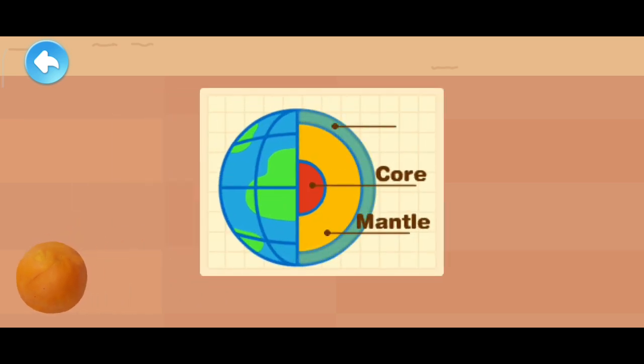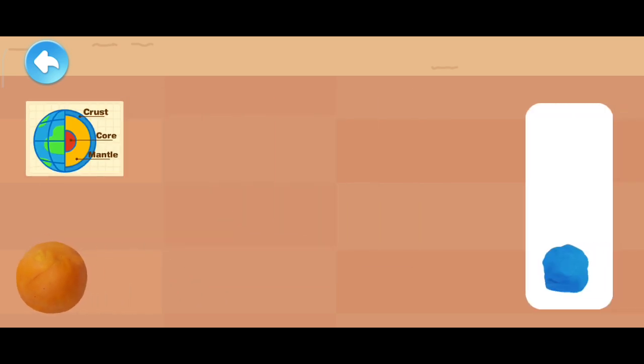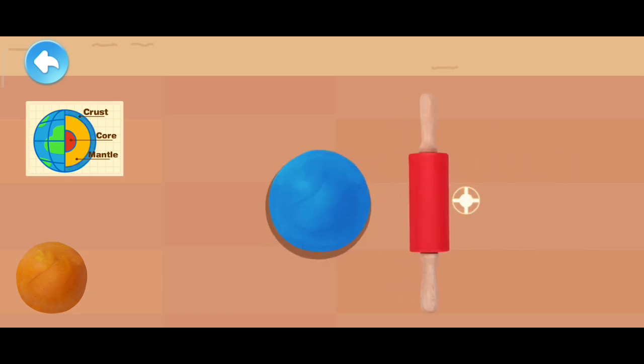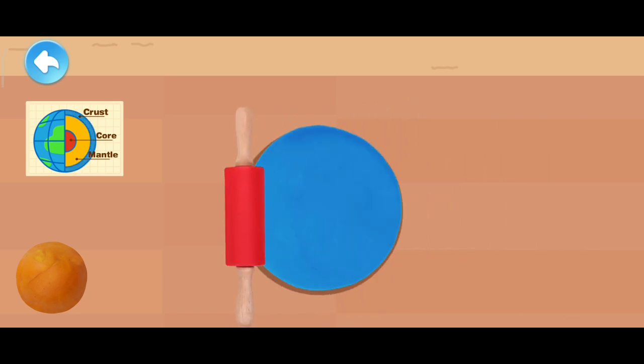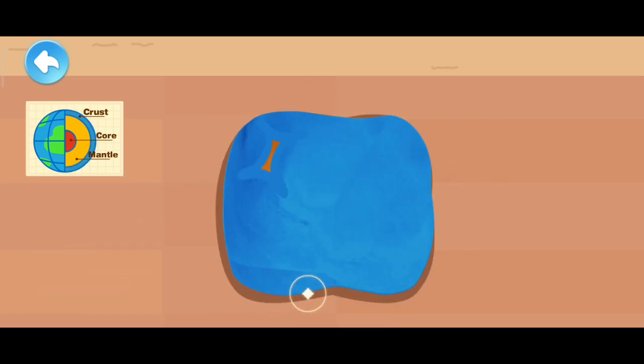The final layer is the earth's crust, which is very thin. Next, let's make the earth's crust. Use the rolling pin to make it flat. The crust is done, too. That's awesome!